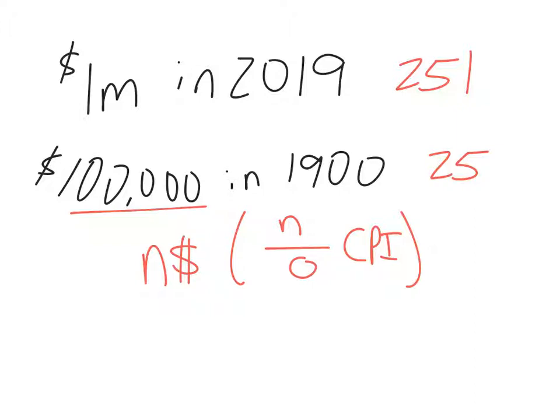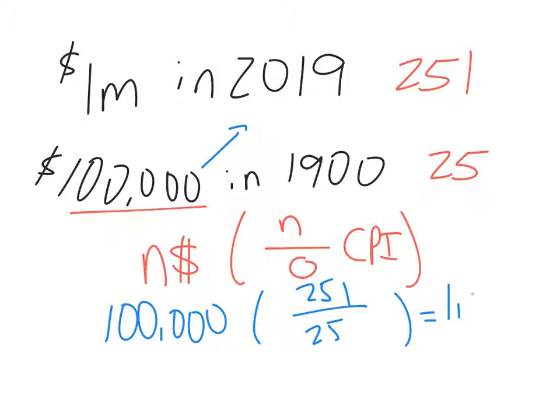So when looking at this equation, the way we're going to plug in the numbers is we're going to move this $100,000 to 2019 value. So we're going to put the $100,000 outside, times the ratio of the CPI, the new CPI being 251, and the old CPI being 25. So we plug that into a calculator, we arrive with an answer of $1,004,000.